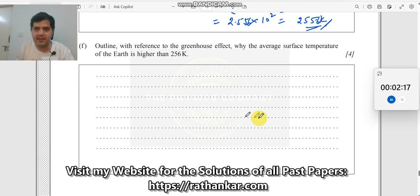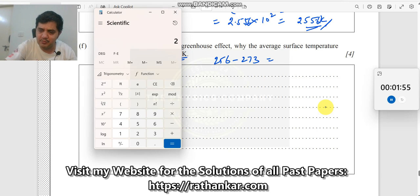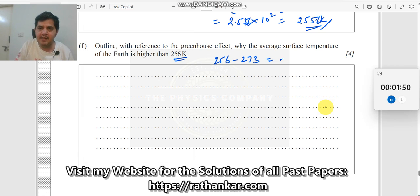Outline with reference to the greenhouse effect: Why is the average surface temperature of the earth higher than 256 Kelvin? How do you know it is higher? What is 256 Kelvin? If you convert this into degree Celsius, this will be 256 minus 273, which is minus 17 degrees centigrade. Are we living in minus 17 degrees centigrade? No. We are above minus 17, we are at 40 degrees centigrade. So why does this happen?